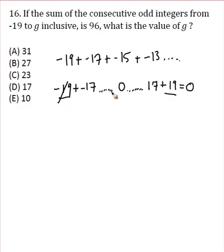Because negative 19 is gonna cross off with the 19, negative 17 crosses off the 17, and then all the way down so really all you're left with is 0. So that's kind of the first trick, knowing that the sum from negative 19 all the way to 19 is 0. Okay, so that's kind of helpful because we're looking for the sum to be 96. So from negative 19 to 19 is 0. What's the next odd integer? It's 21, right?